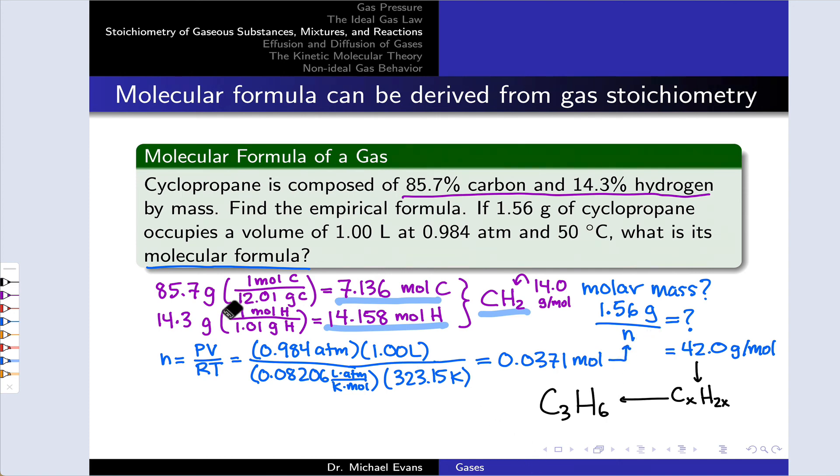This helps us see how the ideal gas law can be used as a stoichiometric tool to calculate number of moles when we know all of those gas variables except for moles.